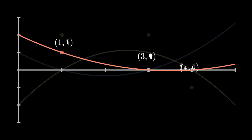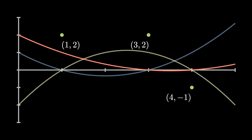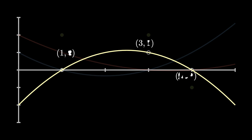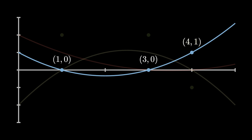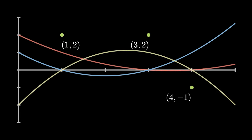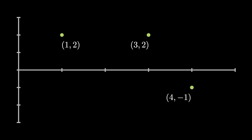So for instance, this first polynomial equals one at x is equal to one, but equals zero at x is equal to three and x is equal to four. Similarly, the second polynomial equals one at x is equal to three and equals zero at x is equal to one and x is equal to four. And lastly, the third polynomial equals one at x is equal to four, but equals zero at x is equal to one and x is equal to three.